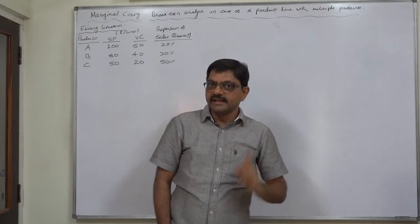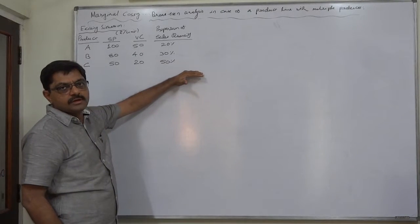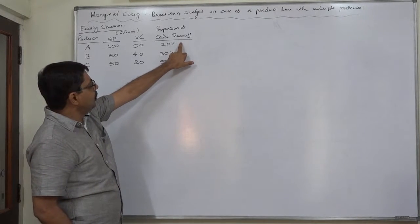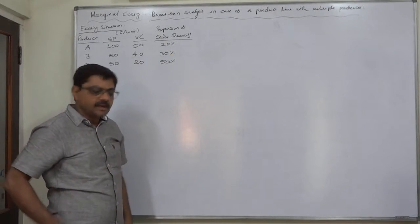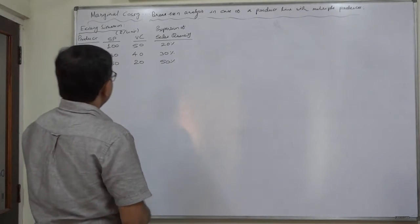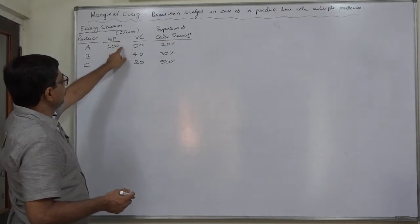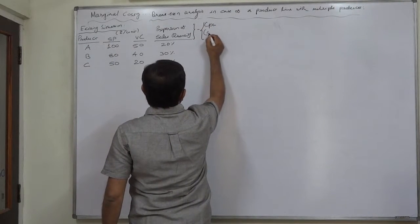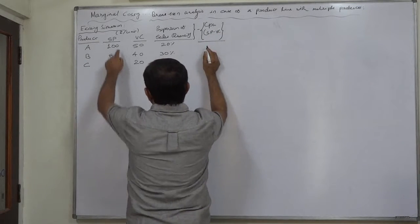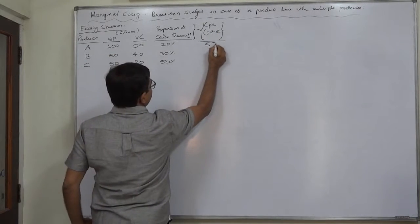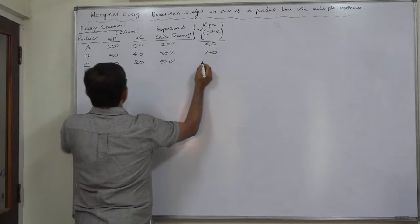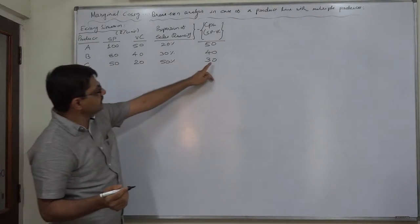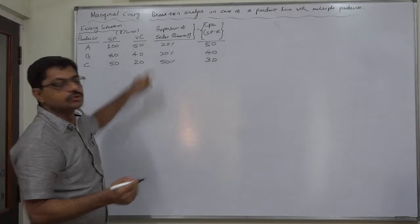Remember these two rules. In this case we have to find out the weighted contribution per unit because the percentage of sales quantity is available. Let us calculate. For that we need contribution per unit, which will be selling price minus variable cost: 100 minus 50 = Rs.50 for A; 80 minus 40 = Rs.40 for B; and 50 minus 20 = Rs.30 for C. Now multiply this contribution by the percentage of sales quantity.